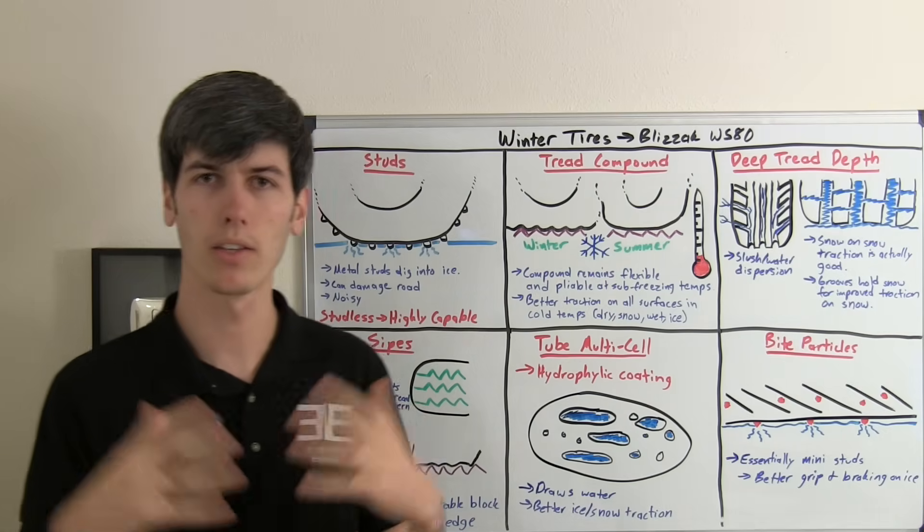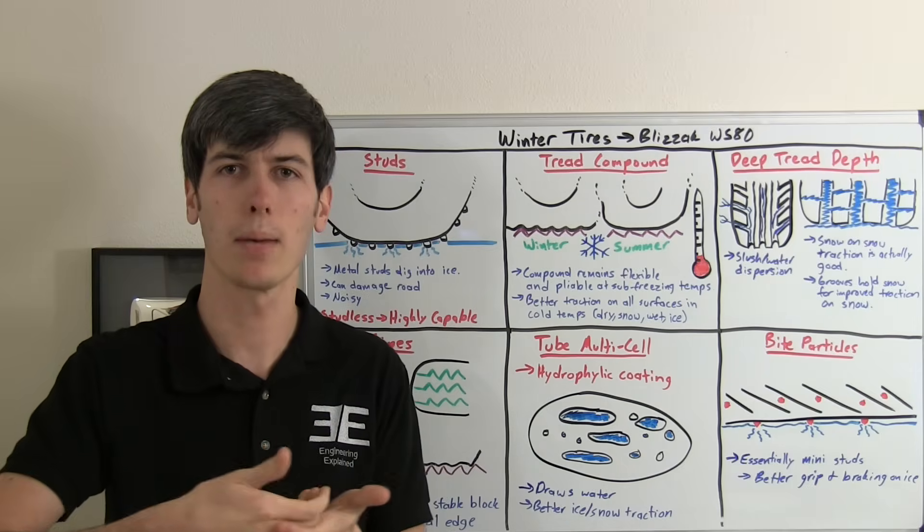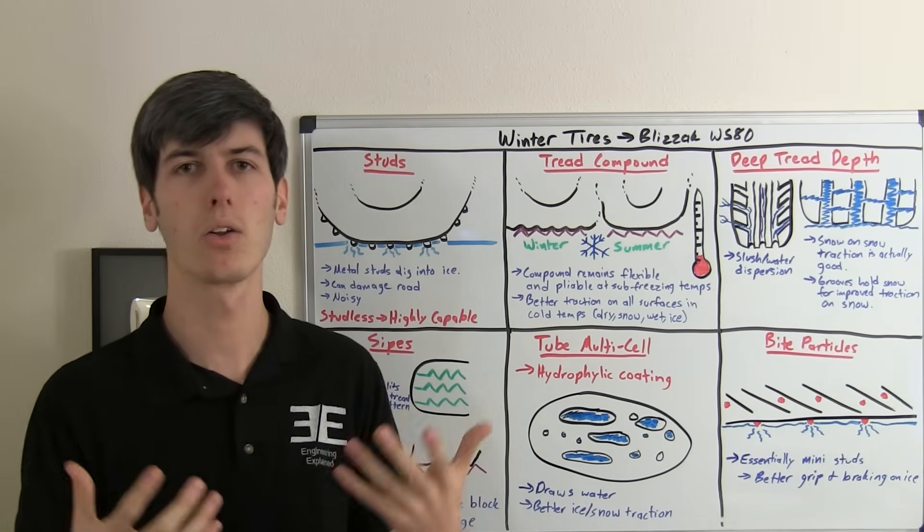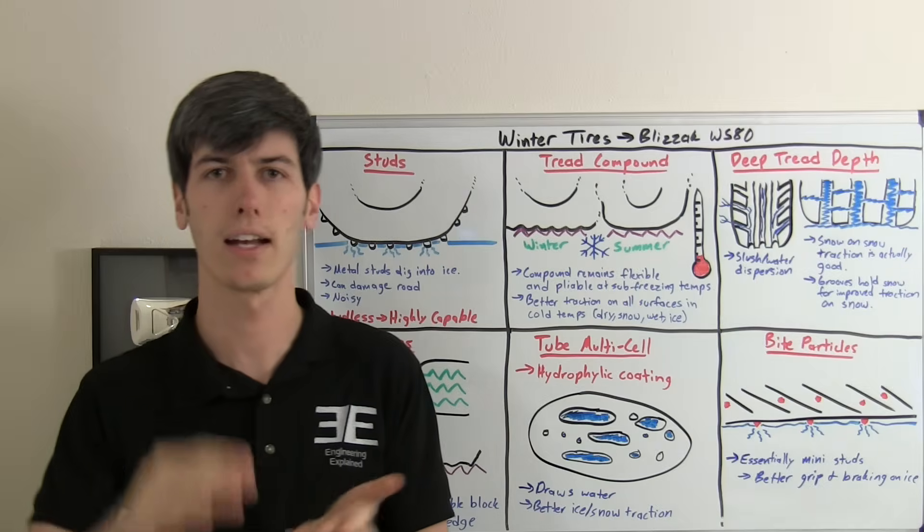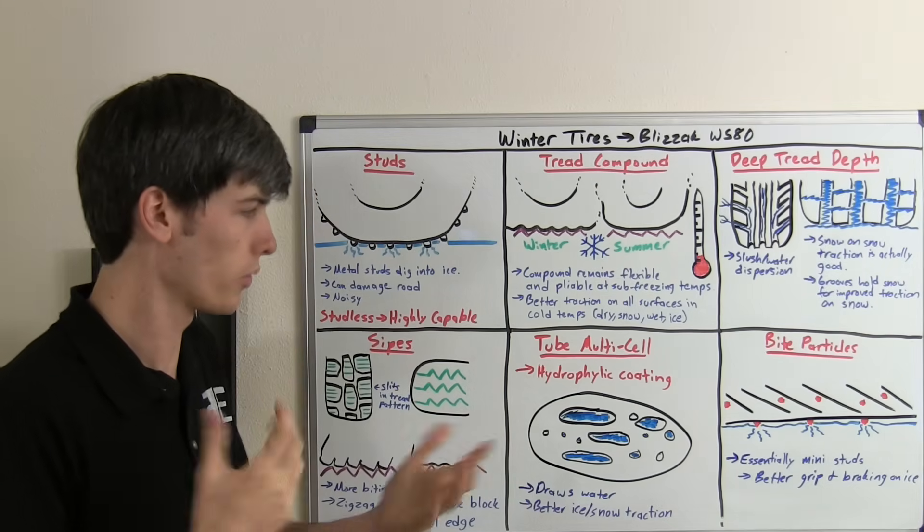Ice is basically the worst traction you can possibly have on the road. What happens is the tire on top of the ice creates a small thin film of water from the pressure, and not only that, but if the sun is shining or something like that, a thin layer of water can form on the surface, and it basically gives you almost no traction.